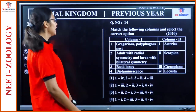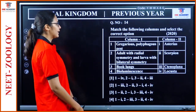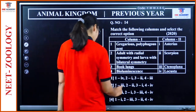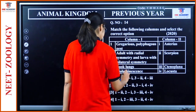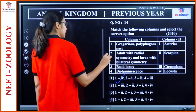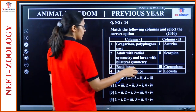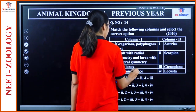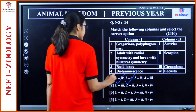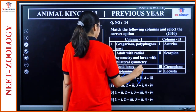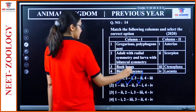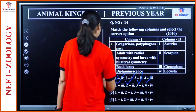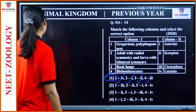Question 14: Match the following. Gregarious polyphagous pest — Locusta — 1-4. Adult with radial symmetry and larva with bilateral symmetry — Echinodermata — Asterias — 2-1. Book lungs — scorpion — 3. Bioluminescence — Stenoplana — 4. Option 1 is the answer.